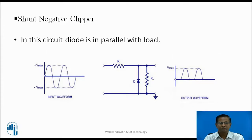Shunt Negative Clipper: In this circuit, the main control element is connected in parallel with the load and it clips the negative half cycle — that is why the name is the shunt negative clipper. During positive half cycle, diode D is reverse biased, it acts as open, therefore output follows the input. During negative half cycle, diode D becomes forward biased, so it conducts and current flows in the anticlockwise direction. Here the load is connected across the diode, so for the complete negative half cycle diode remains conducting, meaning the drop across load is zero — it clips the negative half cycle.